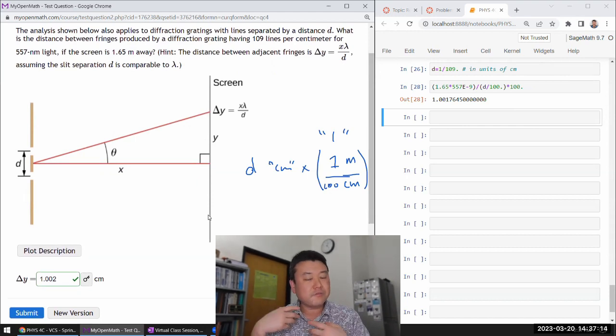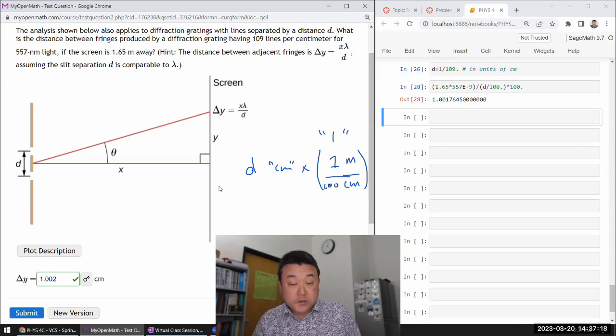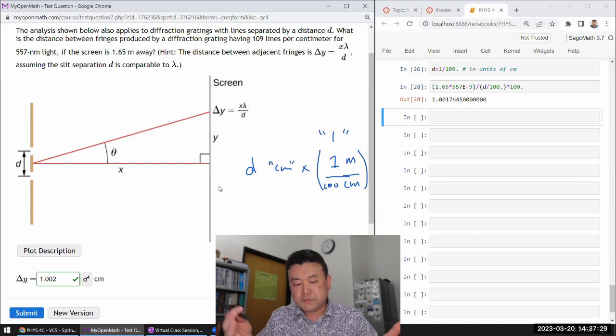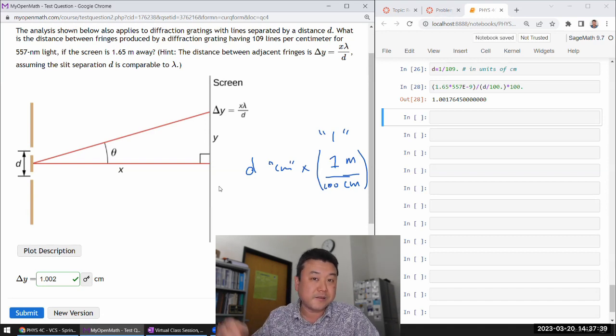This is just reminding you that even though diffraction grating is a new device - and if you remember seeing it in lab, it's quite remarkable how much sharper the diffraction or interference orders are - even with all that newness, as long as you're focusing on the principal maxima, the analysis is actually very familiar because you can recycle the analysis we did for double-slit interference.